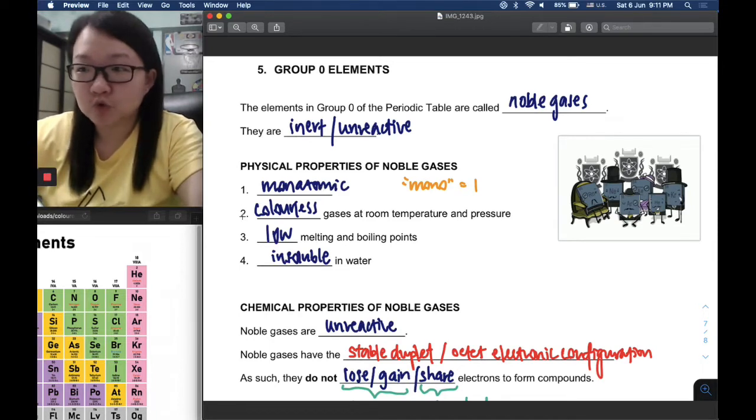Second, noble gases are colorless gases at room temperature and pressure, meaning at 25 degrees Celsius and one atmosphere. Third, they have low melting and boiling points.